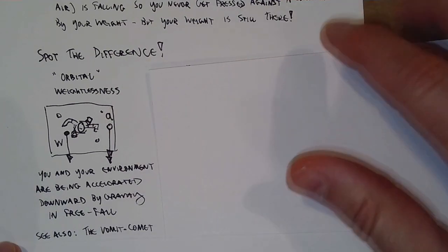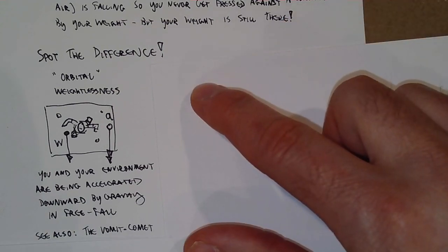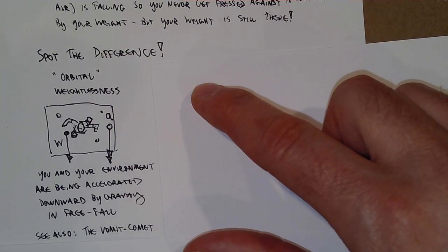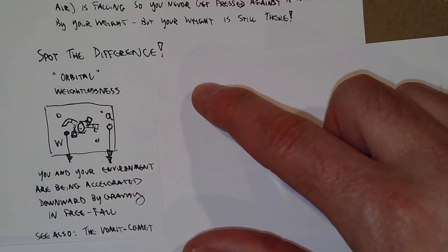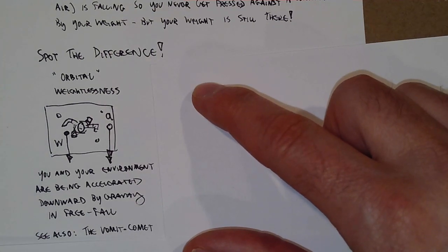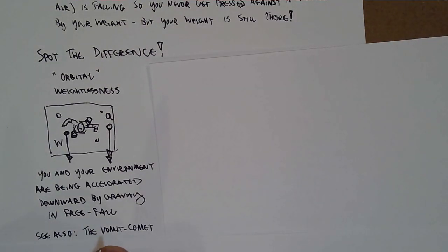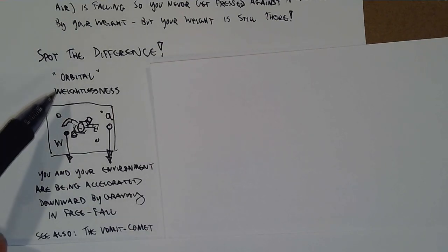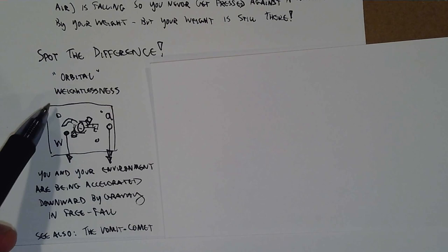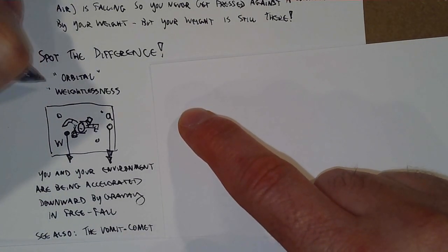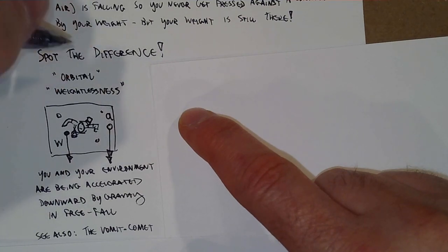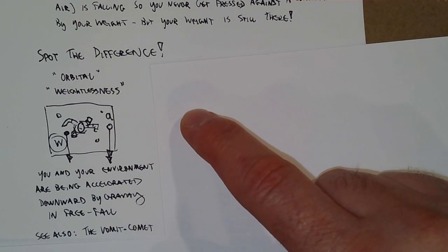Fun fact: the classic movie Apollo 13 - Tom Hanks, Bill Paxton, Kevin Bacon - those scenes in the Apollo capsule where they are floating around and tossing each other wrenches, the very realistic-looking weightlessness was filmed in an airplane that was falling down towards the ground. It's entirely the same experience you would have as an astronaut. I call this orbital weightlessness, but I should put weightlessness in quotes, not orbital, because it's not really weightlessness - gravity is acting on you, so it's not weightlessness at all.